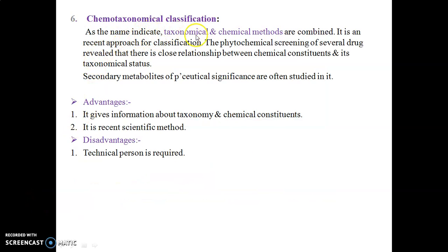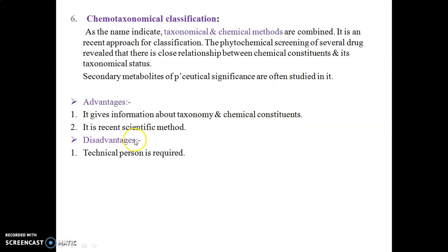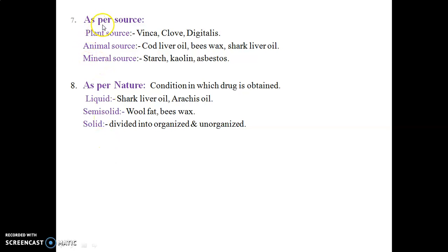Sixth is chemo-taxonomical classification — a combination of taxonomy and chemical methods. It is a recent method of classification in which phytochemical screening of several drugs has been done, establishing a close relationship between chemical constituents and taxonomy. Secondary metabolites responsible for particular therapeutic activities are used as the basis. Advantages: gives information about taxonomy and chemical constituents, and is a recent scientific method. Disadvantage: requires a technical person.